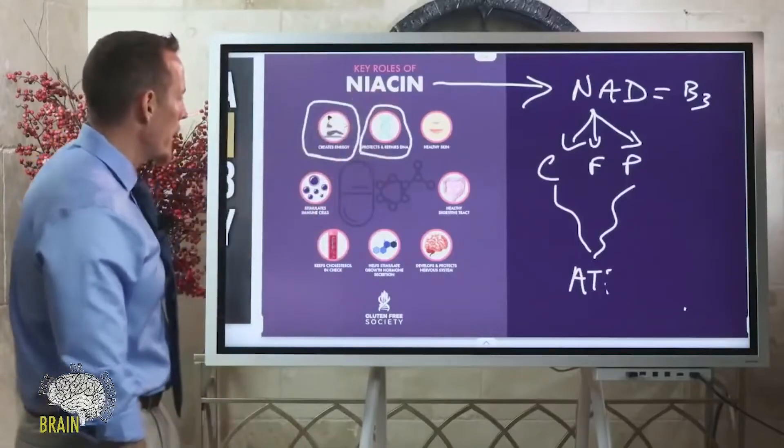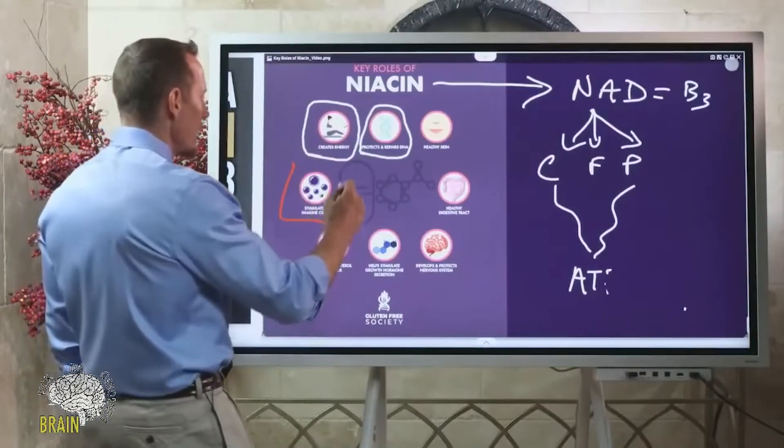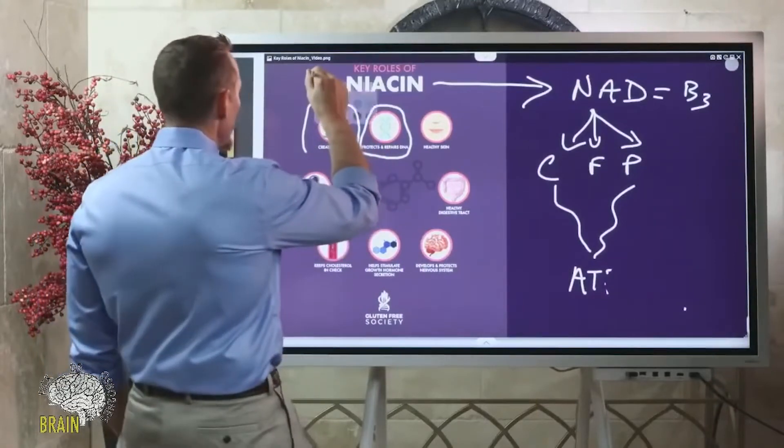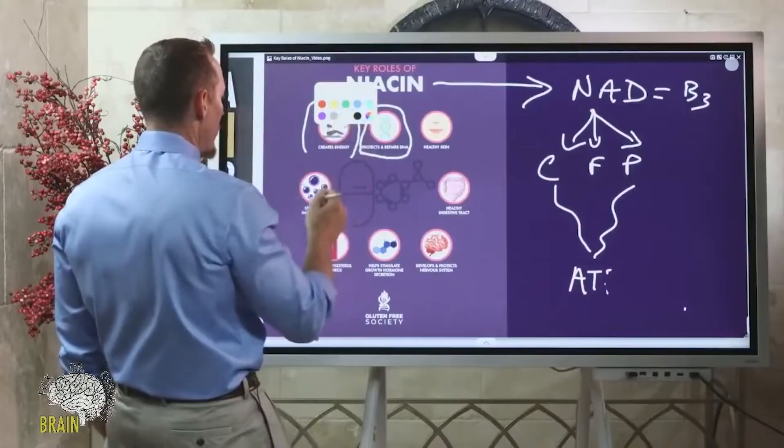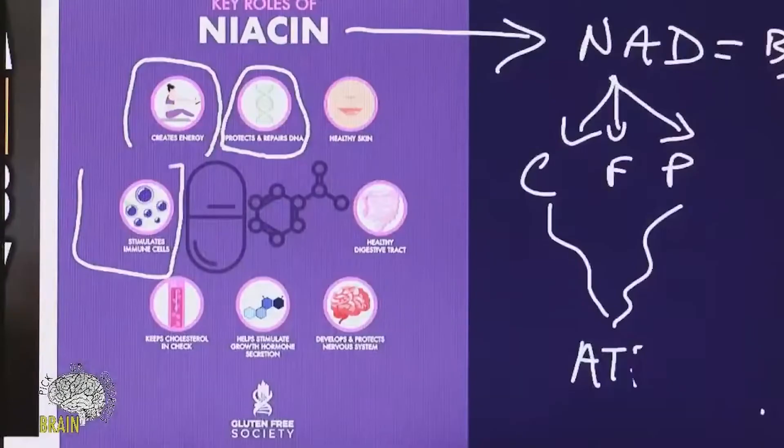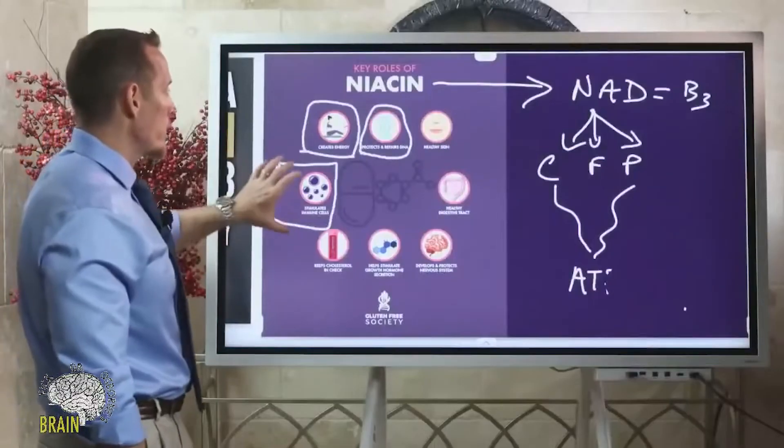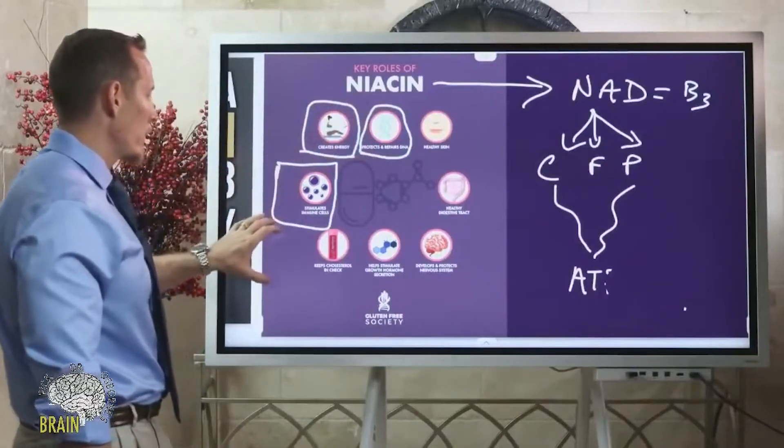When we say it protects and repairs DNA, it does so through that mechanism, through helping to regenerate glutathione, but also through the production of the antioxidant capacity of your cells. Very important. By that same token, it's also known to help stimulate the immune cells properly. Niacin's important for your immune system to work appropriately. This is why we don't want niacin deficiency. Just these three functions alone are very critical.